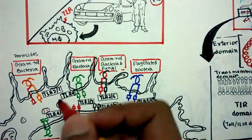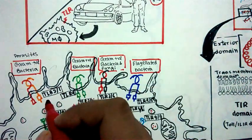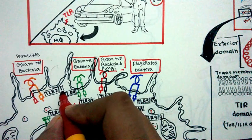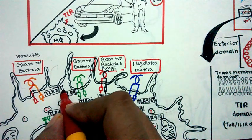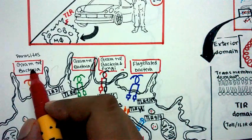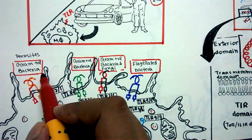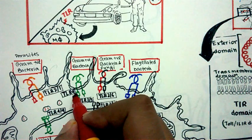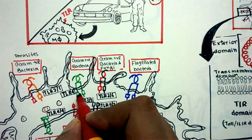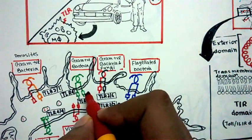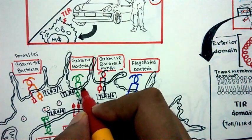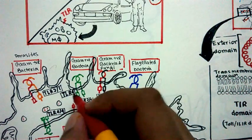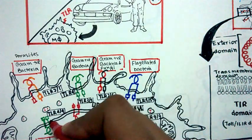We have TLR2 and TLR1. TLR2 and TLR1 can heterodimerize and recognize parasites and gram-positive bacteria. Then TLR4 is a very important toll-like receptor because it's present on the cell surface as well as on the endosomal membrane. So it's present both outside and inside, and can mainly detect gram-positive bacteria.